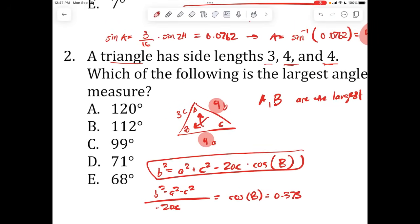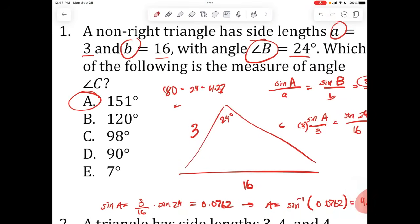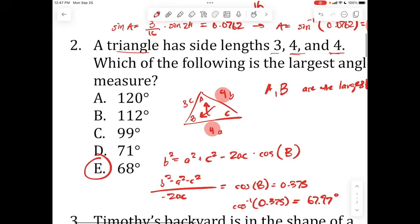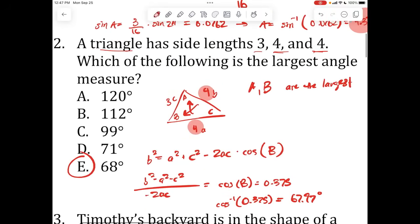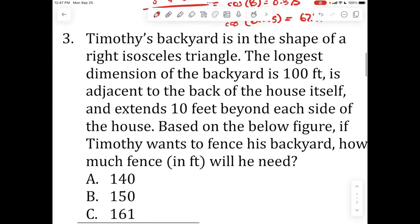So what we're going to do is plug in for all of these. What I just did is I took this equation and rearranged it to isolate cosine of B. I subtracted these things over and I divided everything by negative 2AC and that equals cosine of B. Now if I just do the cosine inverse of 0.375, I end up with 67.97 degrees. That's what B is. That's my largest angle measure. So the answer is E. So think about it as if you're given enough angle measures, you can use law of sines. But if you're just given side lengths, you use law of cosines.